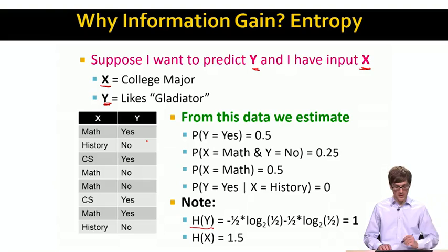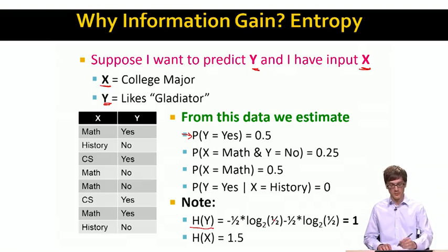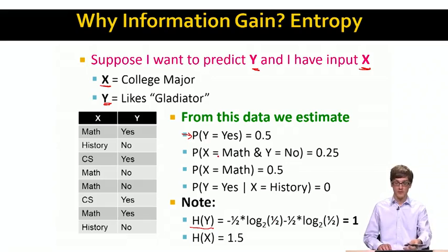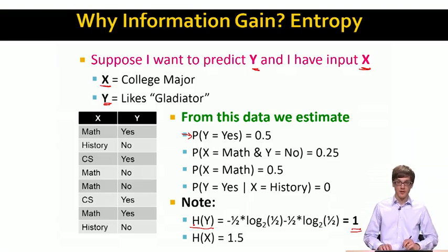First I need to ask what's the probability of y taking value yes. If this is 0.5 — so 4 out of 8 cases is yes — it's 1/2 times log base 2 of 1/2. And then I also need to say how often does y take the other value, the no value — so it's 1 minus 0.5 in this case — another 1/2 times log base 2 of 1/2. So overall, the entropy of y is 1.